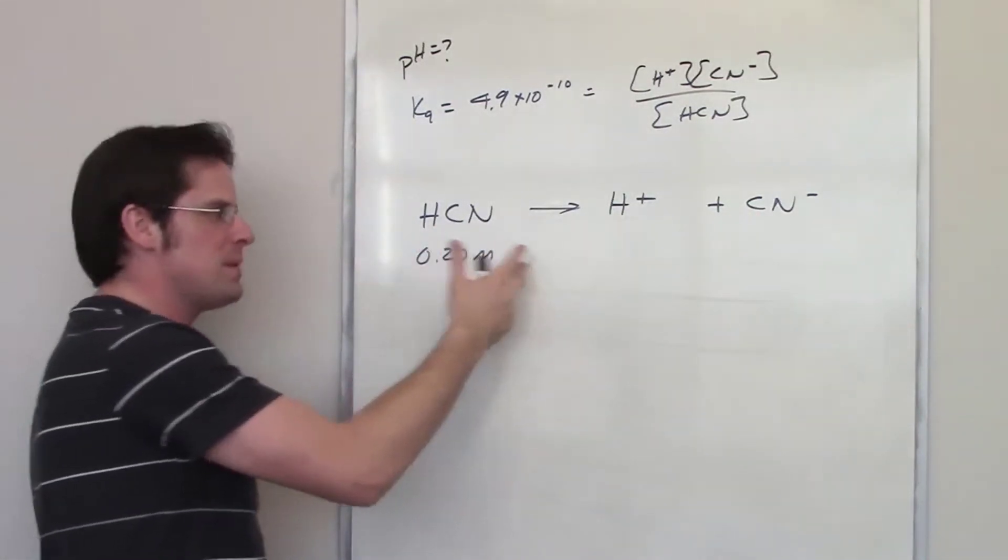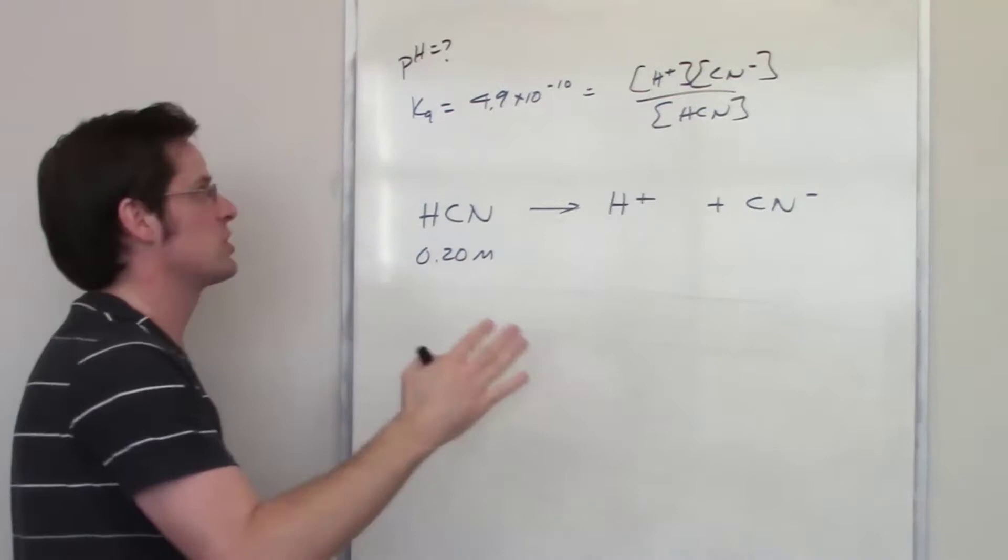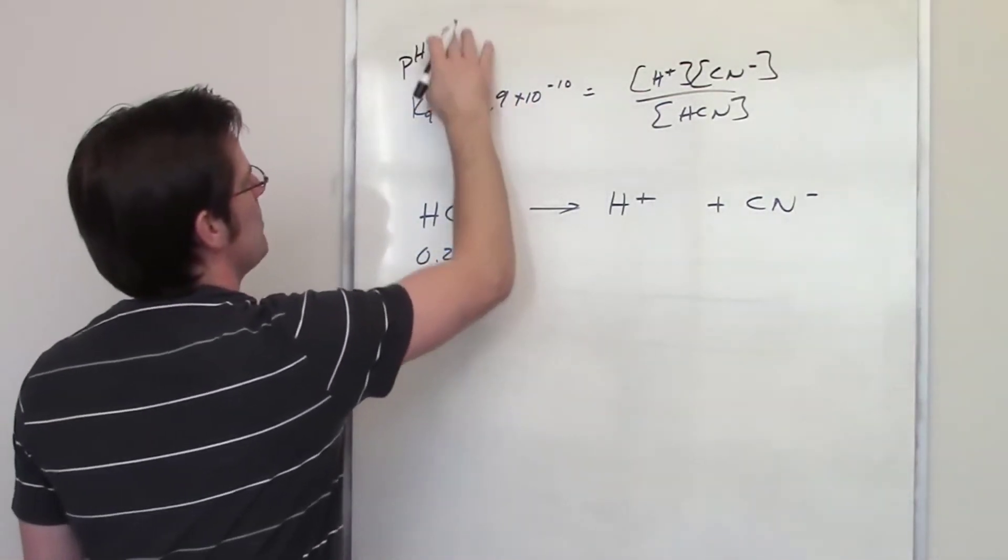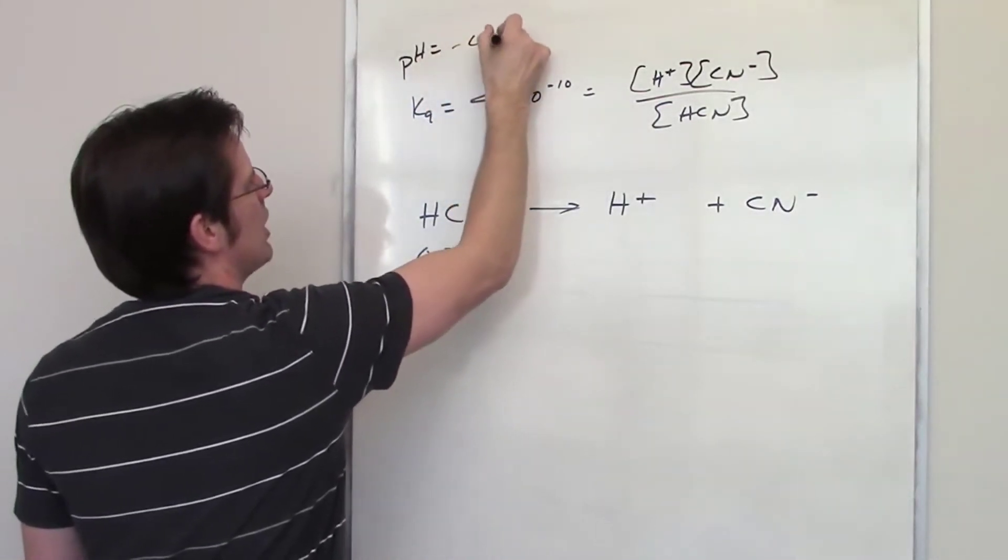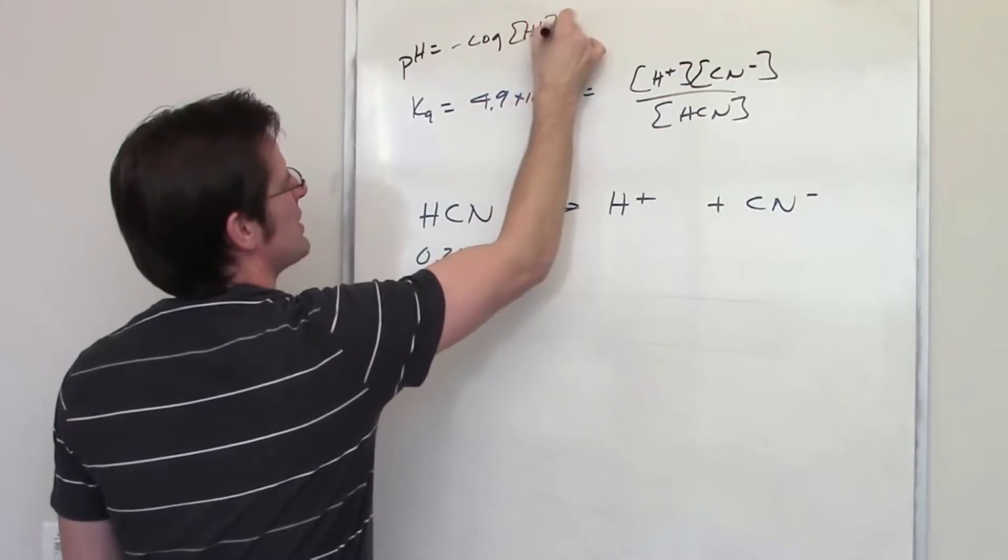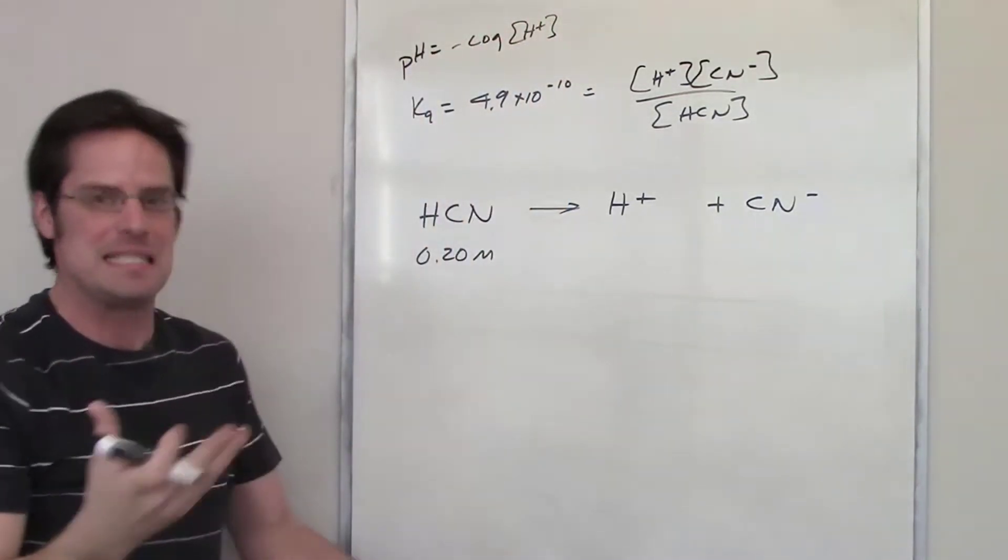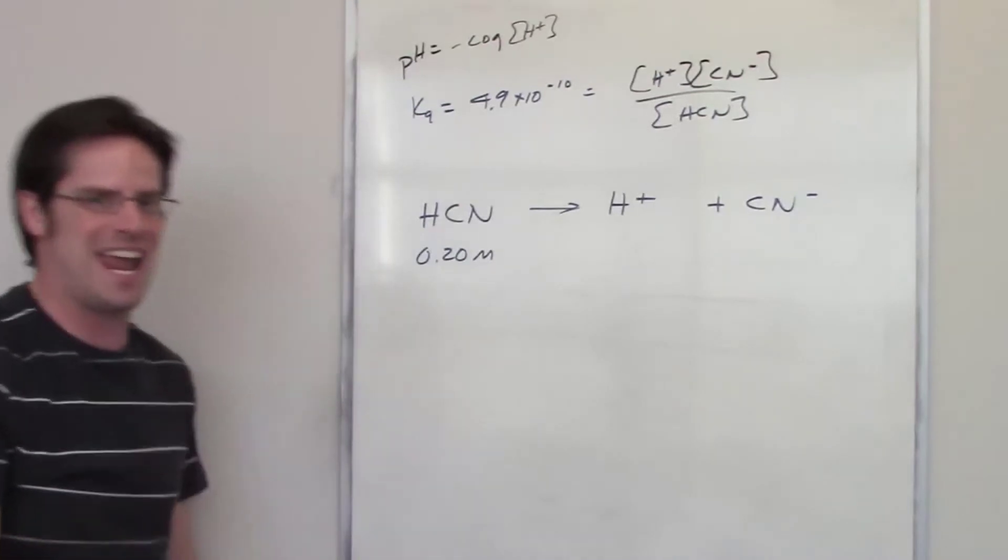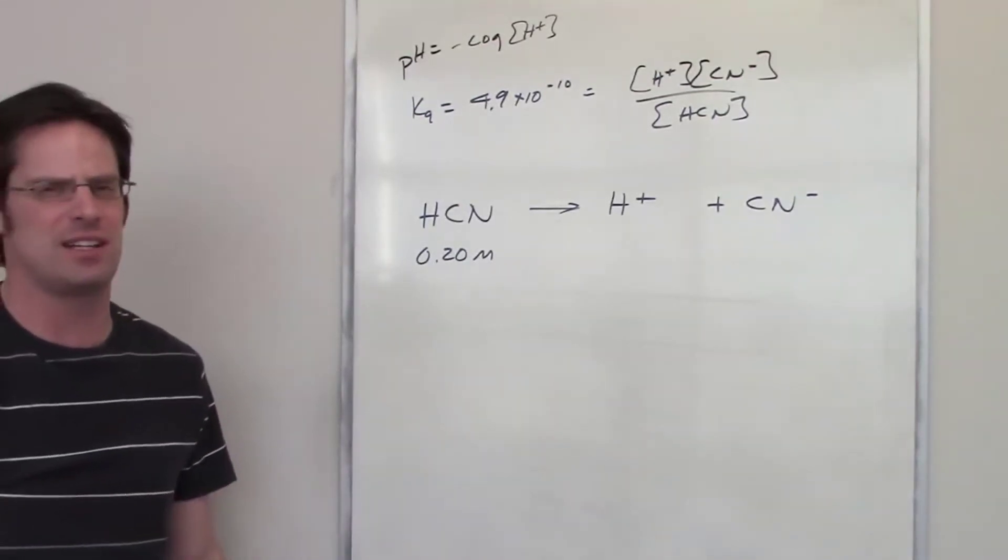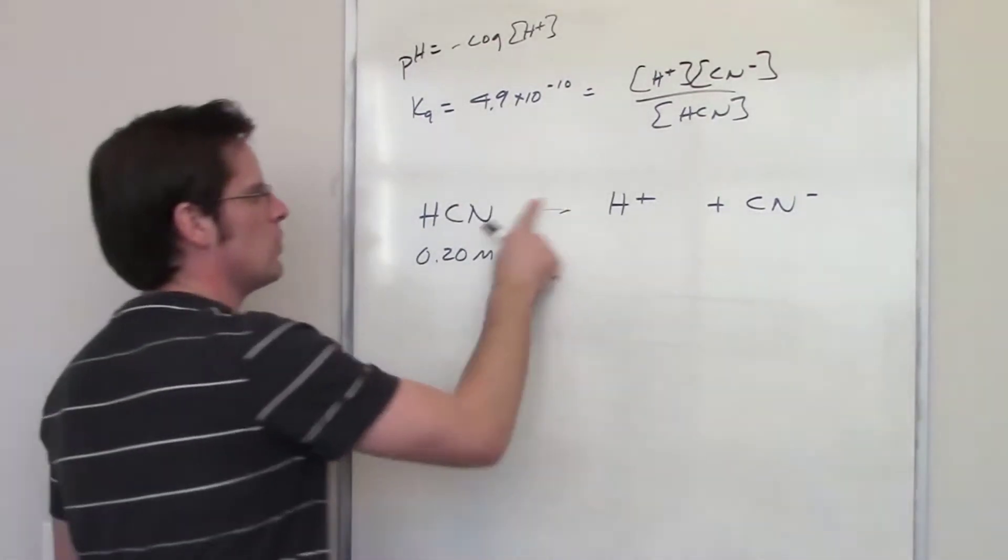So 0.2 molar would be the final concentration of H plus if this were a strong acid and then we could just use the pH equation, negative log of the concentration of H plus is equal to the pH and then we'd be done. Unfortunately this is not a strong acid. Strong acid pH calculation is super easy. This is a weak one.